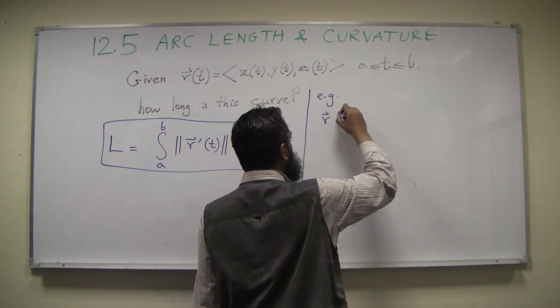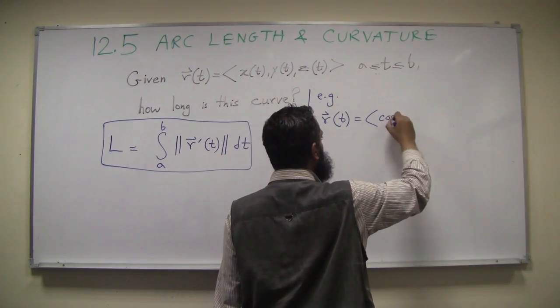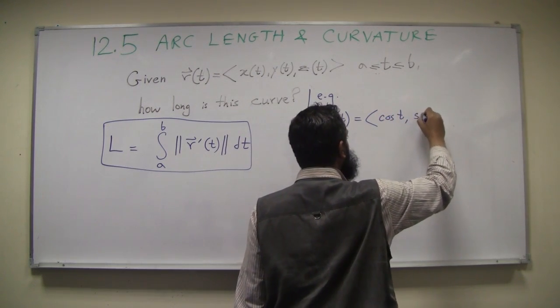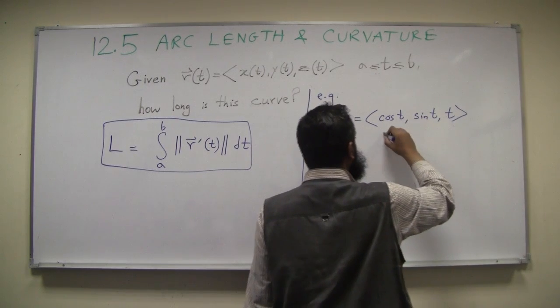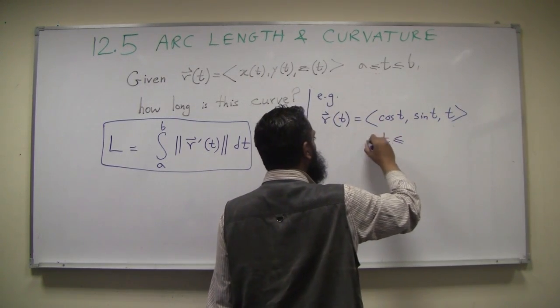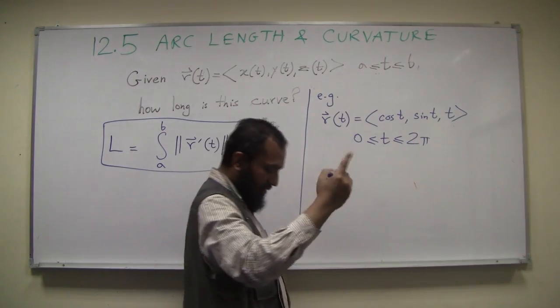Let's say you have the helix or the spiral that we have looked at, this example many times in class: cosine t, sine t, t. And t is between 0 and 2π, let's say for now, so it's just one turn of a helix.